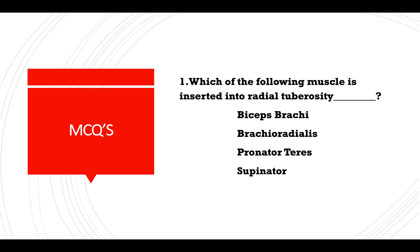MCQ: Which of the following muscles is inserted into the radial tuberosity — biceps brachii, brachioradialis, pronator teres, or supinator? Answer: Biceps brachii.